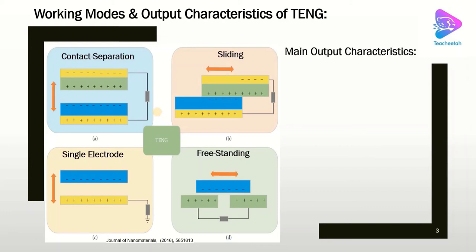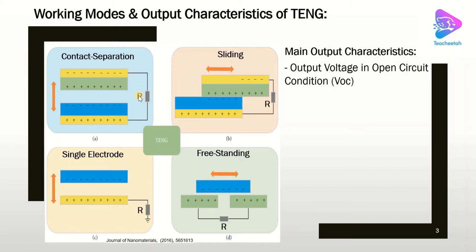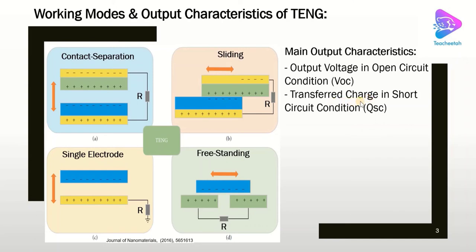What are the main output characteristics of the TNG? The first is the open circuit voltage, which is the voltage when the system is under open circuit condition — meaning the resistive load between the electrodes is at infinity. The other important output characteristic is the transfer charge under short circuit condition, which means R equals zero.